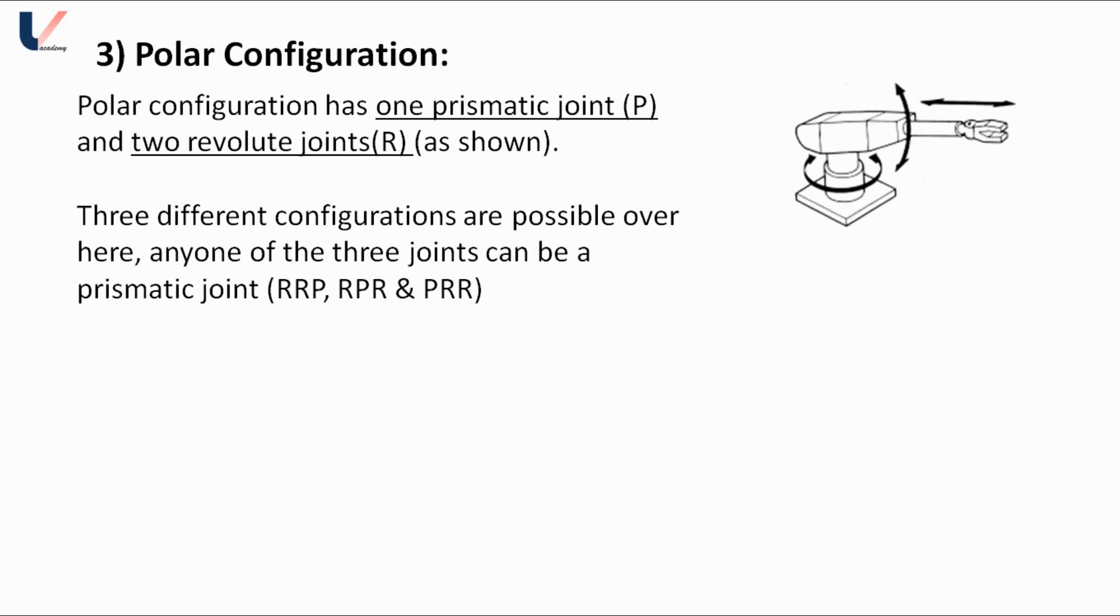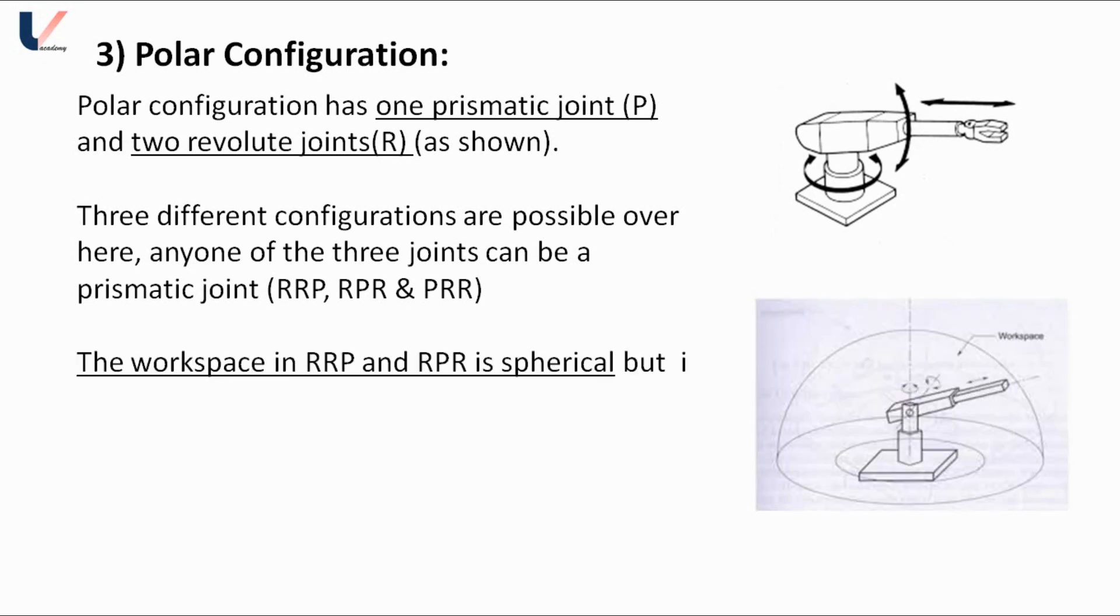The workspace in RRP and RPR is spherical, but in case of PRR the workspace is not spherical. Mechanical stiffness in polar configuration is lower than the previous two, that is the Cartesian configuration and cylindrical configuration.